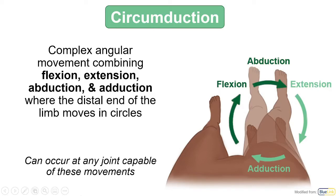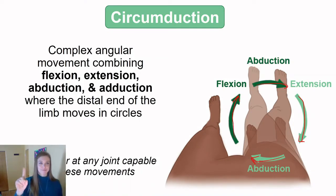Any joint that can perform all four angular movements — flexion, extension, abduction, and adduction — can also circumduct. Circumduction is a complex of four motions: initiated with flexion, brought away from the body with abduction, back with extension, and back to the midline with adduction, allowing the distal end to move in a circle. Both condylar and saddle joints allow all four motions and can circumduct, as seen with the finger.